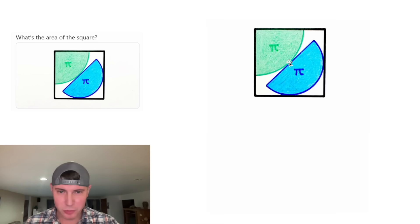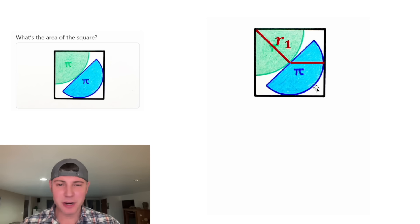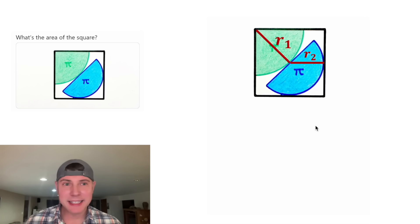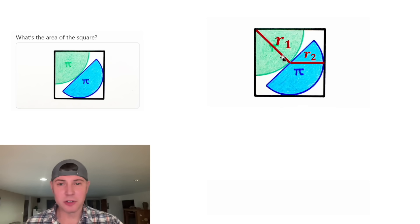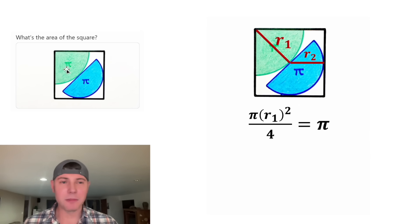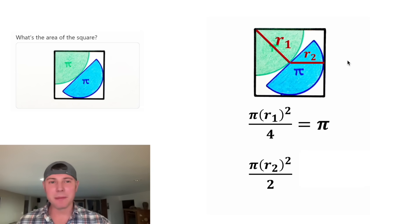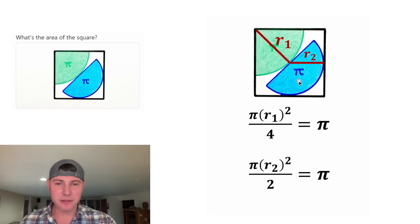First, let's start by drawing the radius of the green quarter circle from here to here, and let's draw the radius of the blue semicircle from here to here. Let's call this radius r1 and this radius r2. Now we can set up some formulas with our new radii. For the first one, it's a quarter circle, so it's going to be pi times r1 squared divided by four, and that's equal to pi. Then since this one is a semicircle, it would be pi times r2 squared divided by two equals pi.